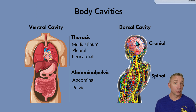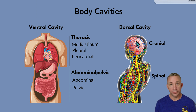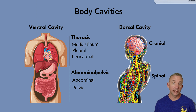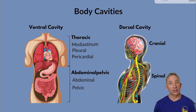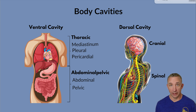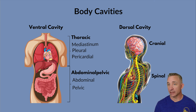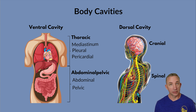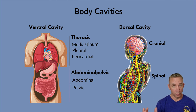The dorsal cavity has two cavities: the cranial cavity, which is the space that holds the brain, and the spinal cavity, which holds the spinal cord. When we look at the dorsal cavity, we'll cover what we call meninges once we get to the nervous system. You've probably heard the term meningitis. The brain and spinal cord are all just one big piece wrapped with membranes called meninges.